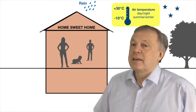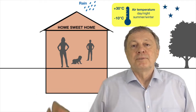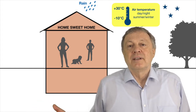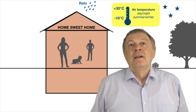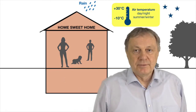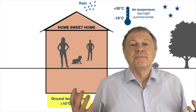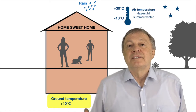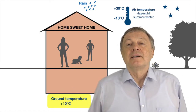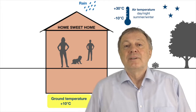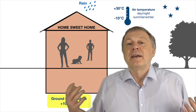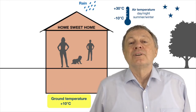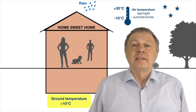In our area we typically have summer temperatures up to about 30 degrees Celsius, sometimes higher, and in winter it goes down to minus 10 or sometimes lower. Your house is also on some kind of ground, and in the ground the temperature difference between winter and summer is not really large. The deeper you go the more similar it becomes — in our area we have about plus 10 degrees Celsius as an almost constant temperature if you go down a few meters.